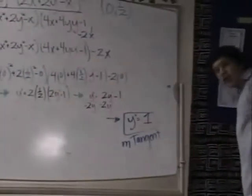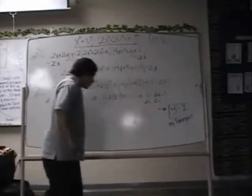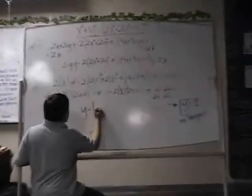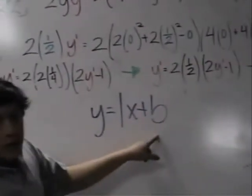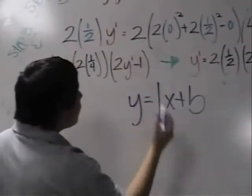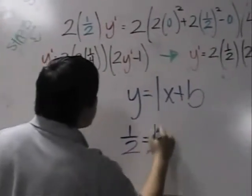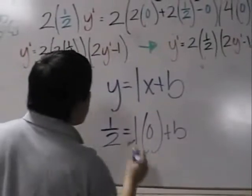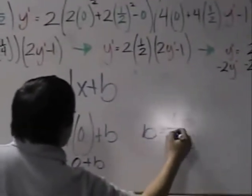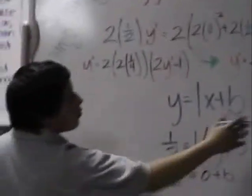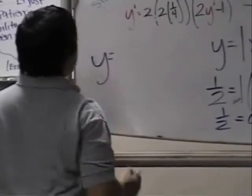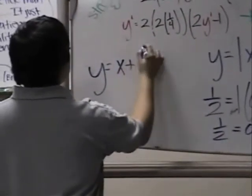As Jackie had mentioned earlier, we now have the slope of the tangent line. All you're going to have to do is use the slope-intercept form. What you're going to do for that is y equals 1x plus b. You want to try to find the y-intercept to conclude the whole equation. So what we're going to do is apply in the point: 1 half equals 1 times 0 plus b. 1 times 0 is 0, and the y-intercept is 1 half. So now that you have the slope of the tangent line and the y-intercept, the equation of the tangent line is x plus 1 half.